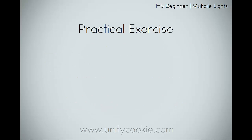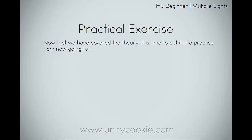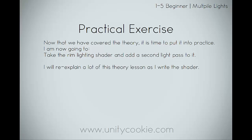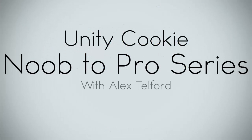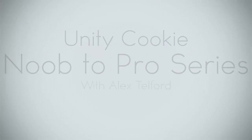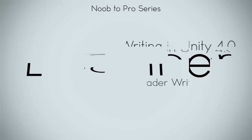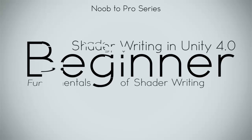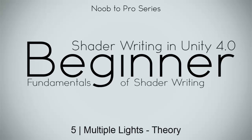Now we're going to have a practical exercise. Now that we've covered the theory, albeit a little fast, it's time to put it into practice. I'm now going to take the rim lighting shader and add a second light pass to it. I will be re-explaining a lot of this theory as I write the shader, so don't worry if you didn't understand any of this.